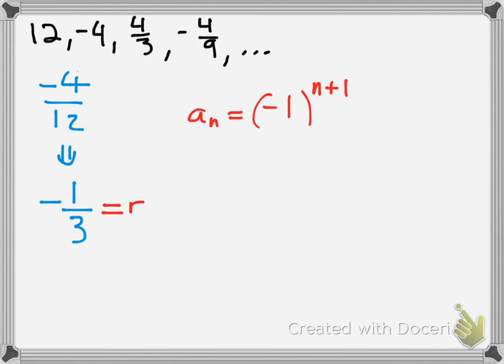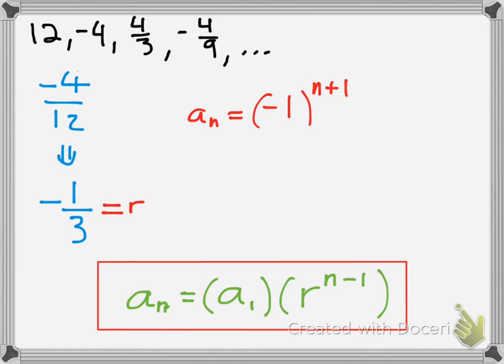Notice that it's decreasing by and alternating by a factor of 1 third, and this is something called a geometric sequence, and a geometric sequence has this formula or notation. And what this is saying is you pretty much take your first term, you multiply it by that r factor here, that common value you found, and you take it to the power of n minus 1, and that is a geometric sequence.